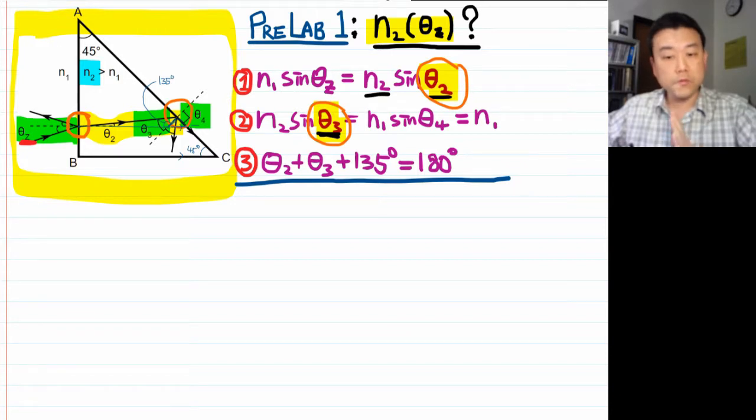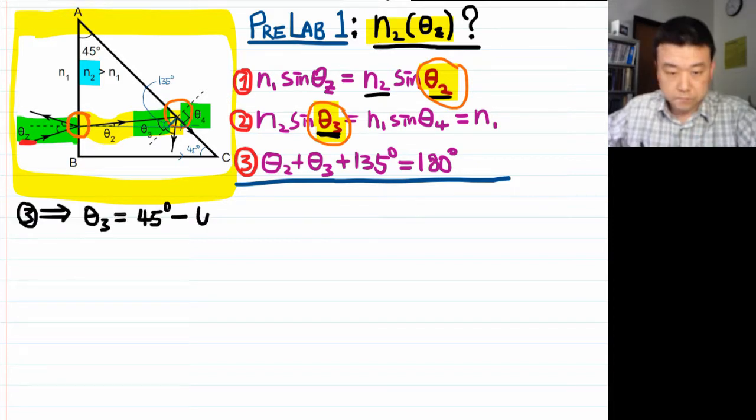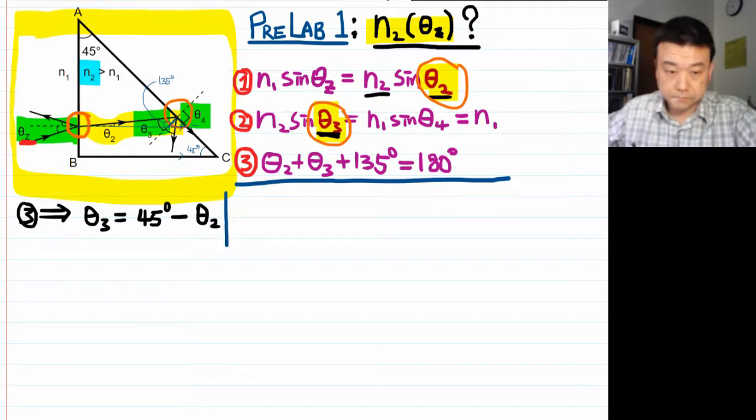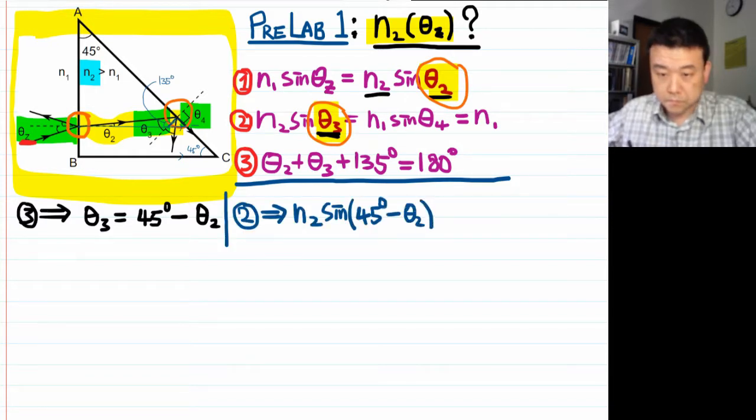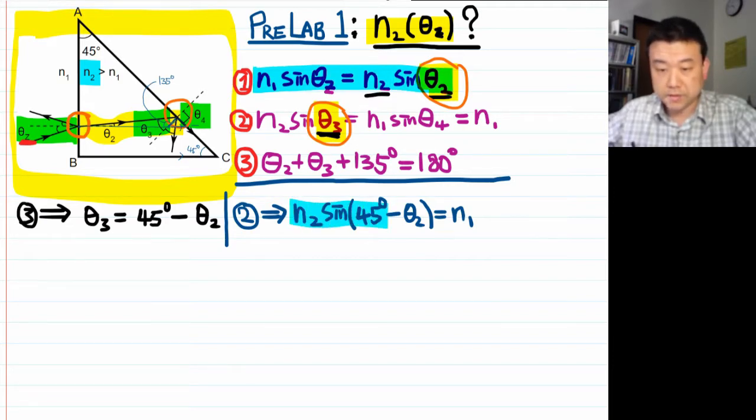The strategy I like is substitution, because it works every time. So I'll solve equation 3 for Theta3. Now I can plug this into everywhere where I see Theta3 to get rid of Theta3. So I see Theta3 only in equation 2. So let me plug that in there and let's see what we get.